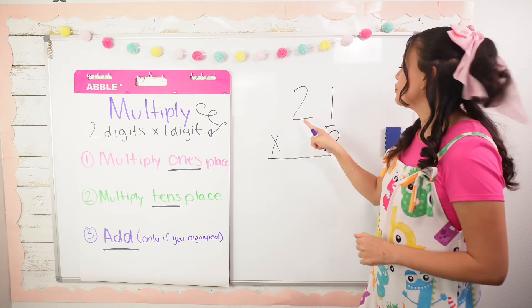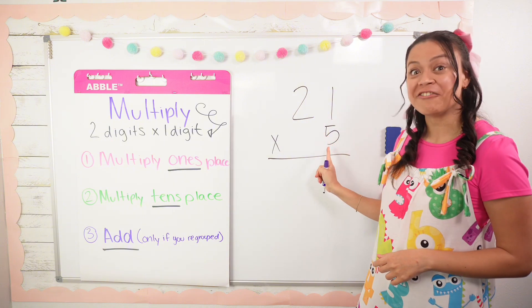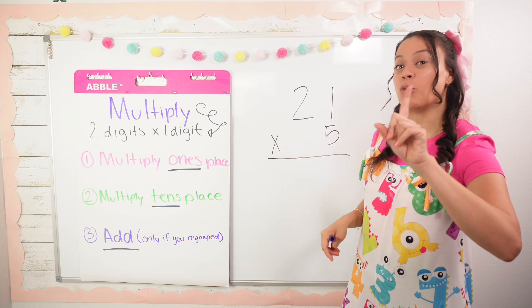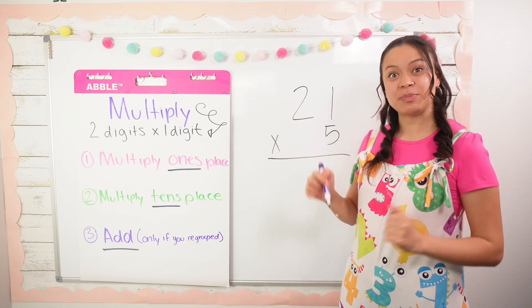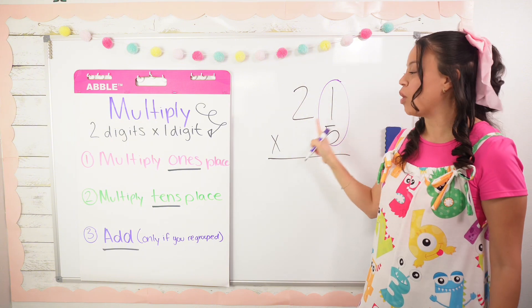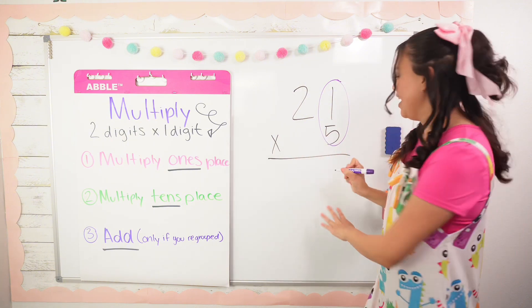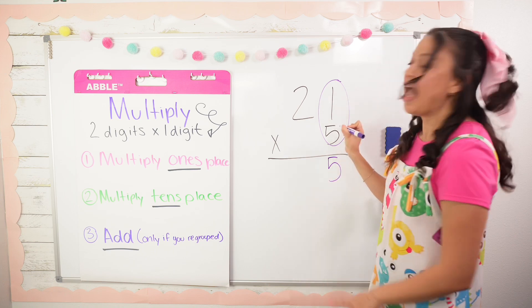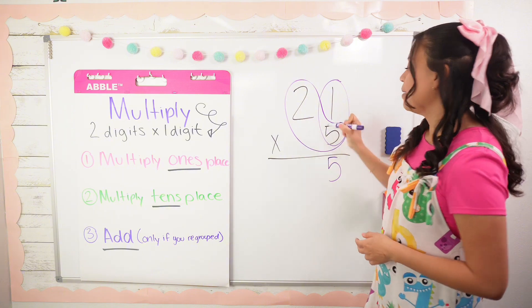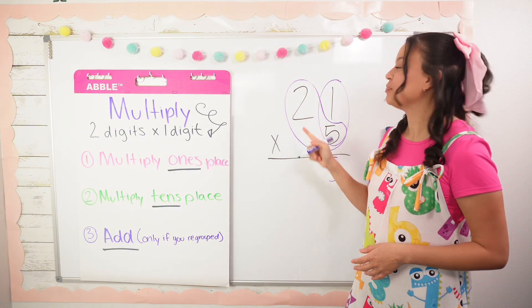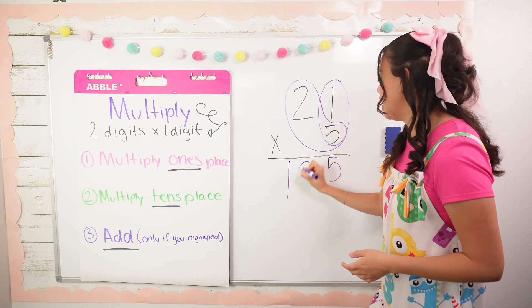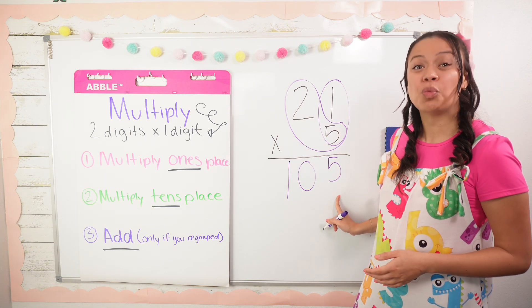For our second example we have 21 times 5. I've already lined up my numbers using place value. Step one: multiply the ones place — I'll draw my butterfly wing. 1 times 5 is 5. Step two: multiply the tens place — second butterfly wing here. 2 times 5 is 10. So our product is 105.